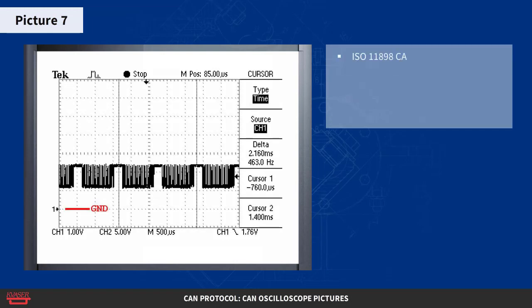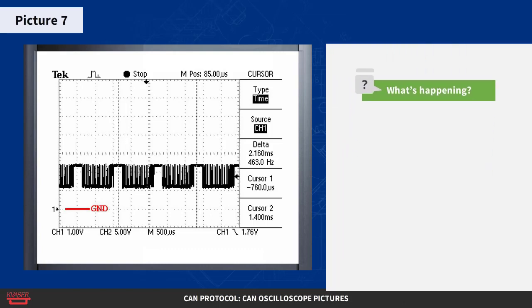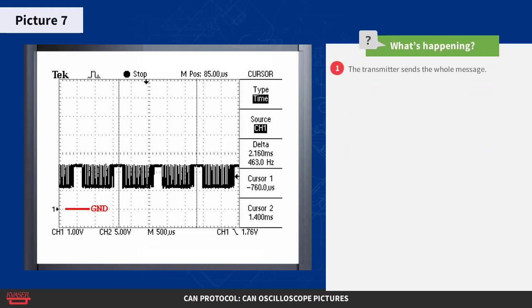Here is yet another picture. In this setup, there is only a single node on the properly terminated CAN bus. It's trying to transmit a message, but no one is listening. So what's happening? First, the transmitter sends the whole message. The transmitter expects a dominant level in the ACK slot, but as no one is listening, no ACK arrives, so the transmitter detects an acknowledgement error.